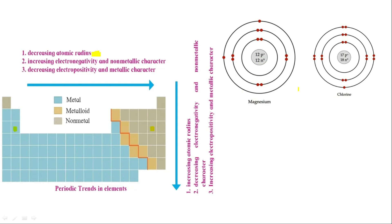If there are more protons, there is more positive charge, and therefore more attractive force is exerted on the electrons. This means the electrons will be tightly packed. So the atom becomes smaller — this is why atomic radius decreases going left to right. And because the electrons are tightly held, the atom will not easily lose them.